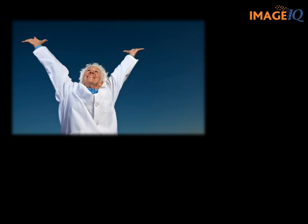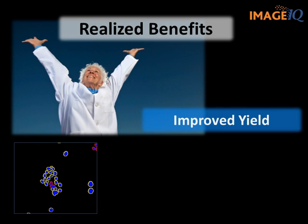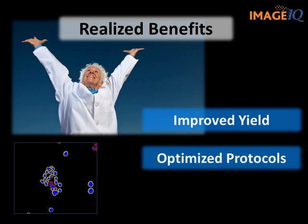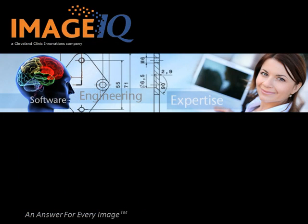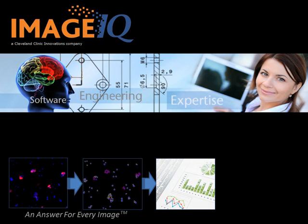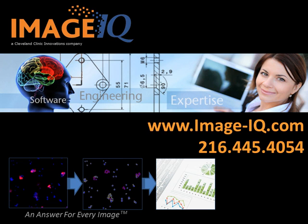Thanks, Amit. Once this custom solution was in place, our client realized they could make substantial improvements in their transfection yield by simply adjusting their protocols. Since the custom software analyzed the entire cell culture surface data, they were relying on much more comprehensive and accurate data to guide their studies and decision making. Just as important, this client saw a 90% improvement in the time required to generate quantitative transfection data — what originally took two weeks now only required a single day. That wraps up this brief review of how ImageIQ helped one of its pharmaceutical clients improve the speed and precision of their gene therapy development. If you found this case helpful and would like to see others, please visit our website or give us a call. Thank you for your time.